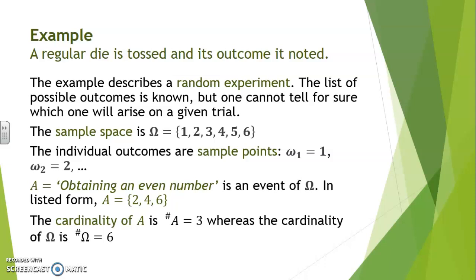The cardinality of A is denoted by number A and is equal to three in this case, whereas the cardinality of the sample space, number of omega, is equal to six.